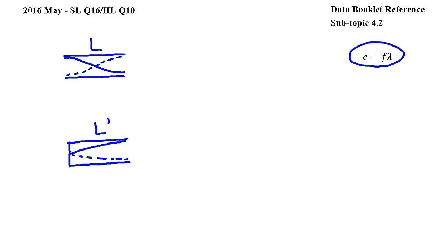Let's use this equation from subtopic 4.2 to write expressions for both pipes. Here c is the speed of the wave in a pipe, f is frequency, and lambda is wavelength.